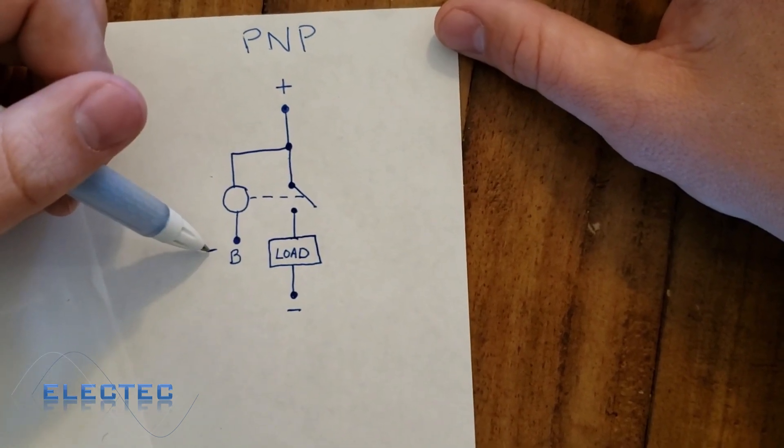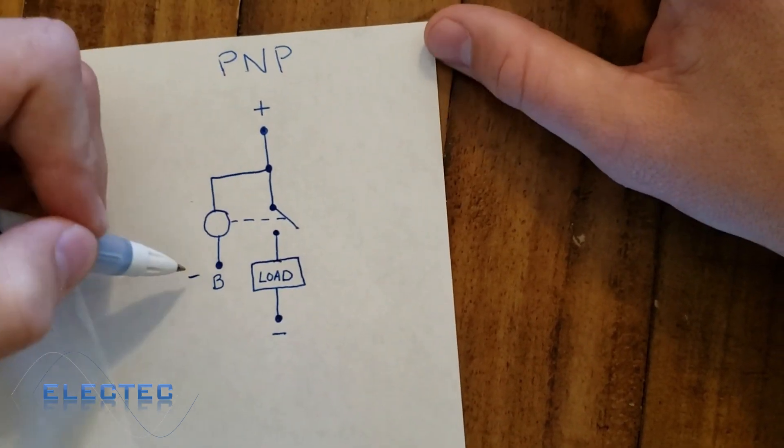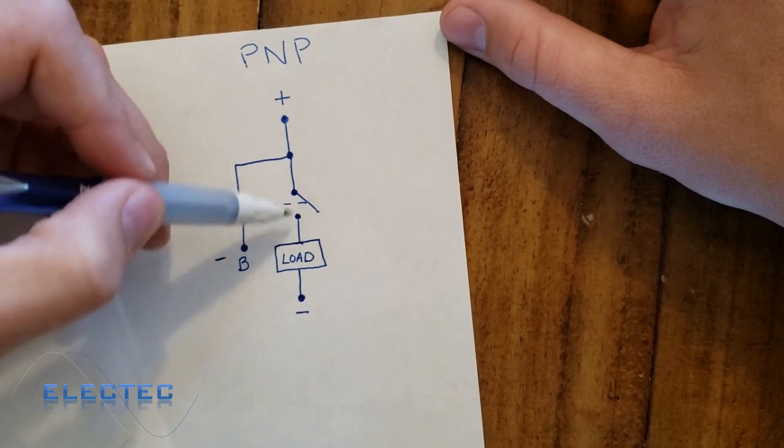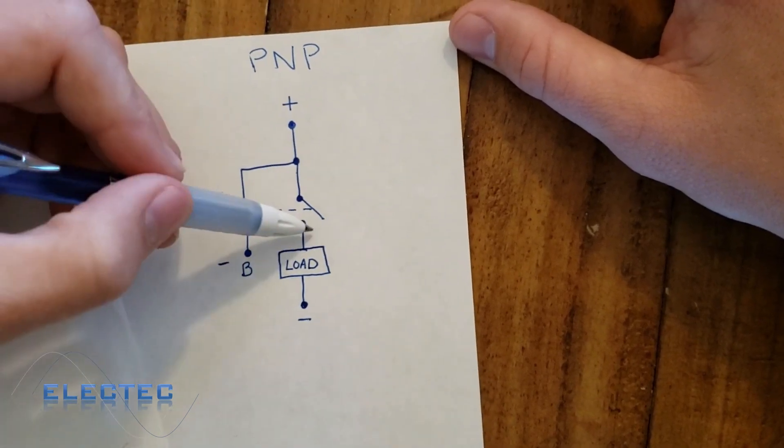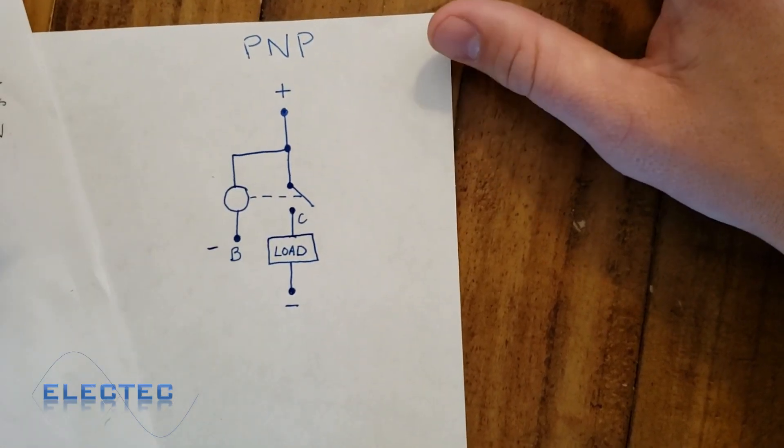When we leave the base disconnected, or we supply it with positive voltage, either way, when we leave it disconnected, the relay turns off, the switch opens, and the load is off. But at this point right here being the collector, the collector is floating.